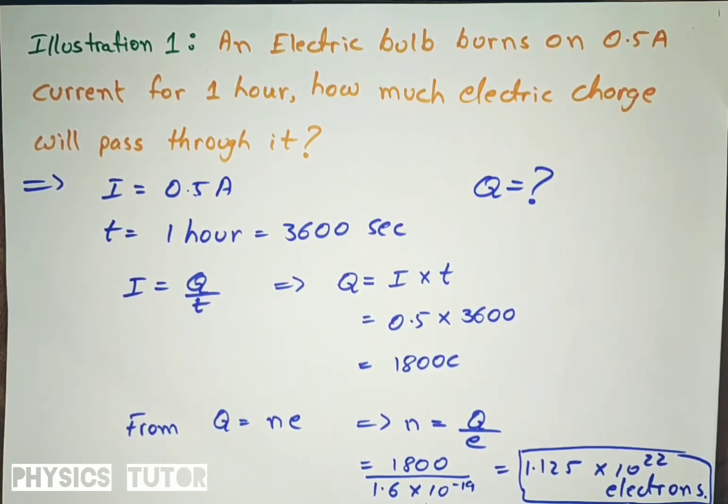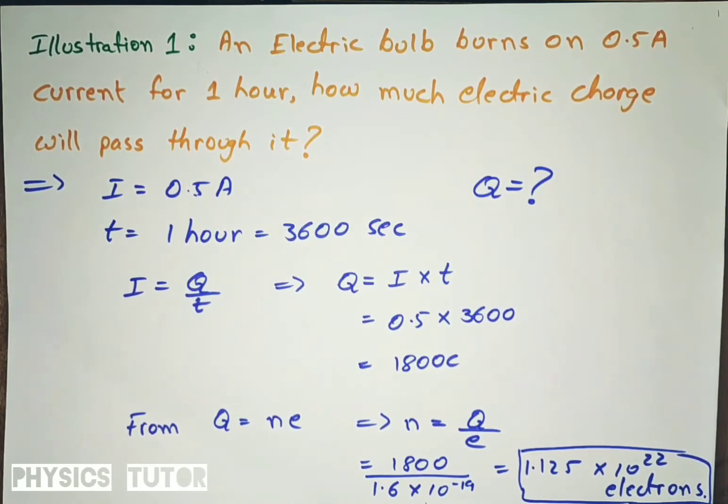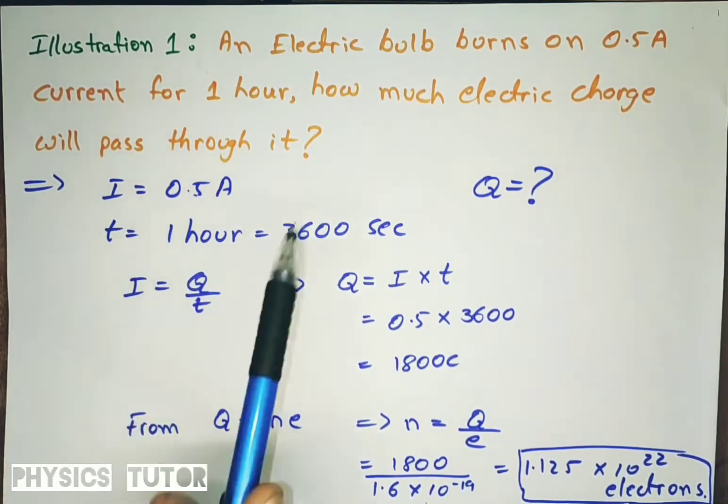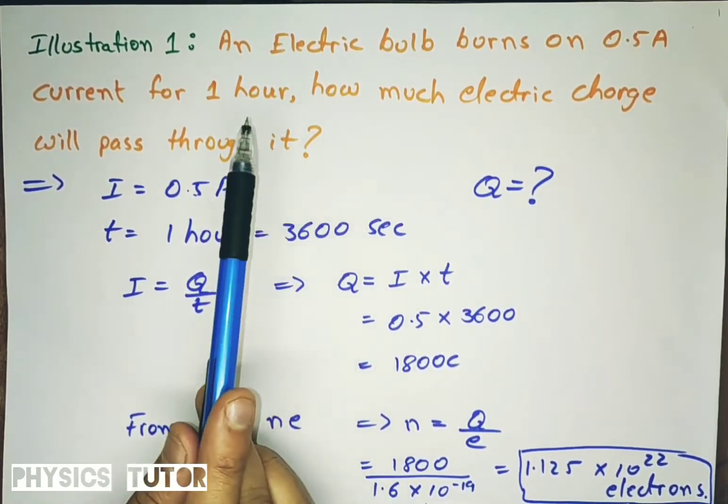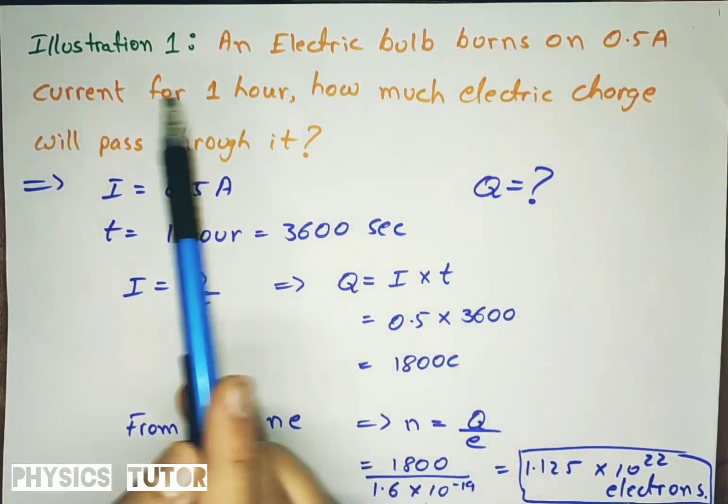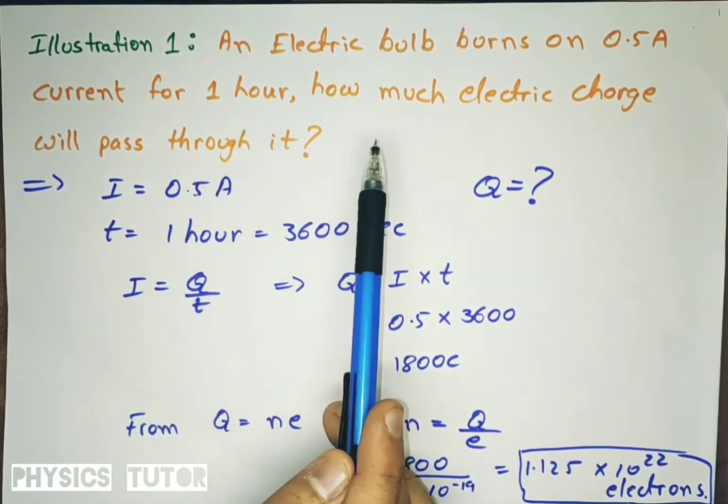In the last part we have seen what is electric current, its measurement, what are its units, what are its formulas. So today we will have an example or illustration to solve. The question is: an electric bulb burns on a 0.5 ampere current for one hour.